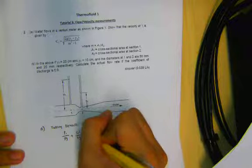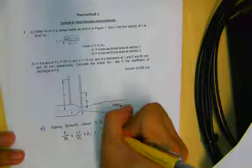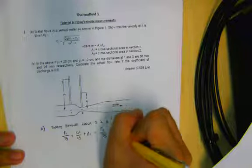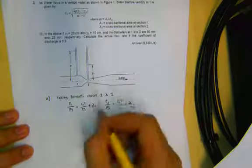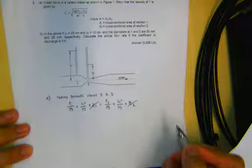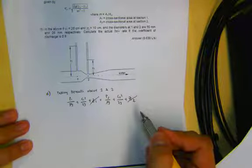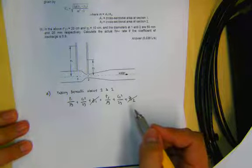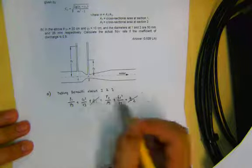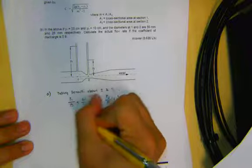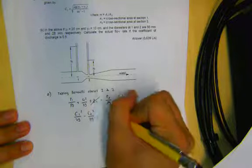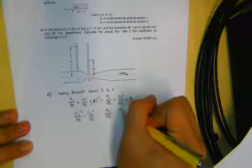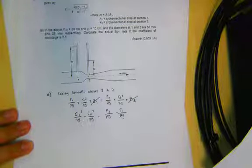So P1 over rho G plus C1 squared over 2G plus Z1 equals P2 over rho G plus C2 squared over 2G plus Z2. Since 1 and 2 are at the same level, the potential terms are the same and cancel out. We are going to shift all the velocity terms to one side: C1 squared over 2G minus C2 squared over 2G equals P2 over rho G minus P1 over rho G.